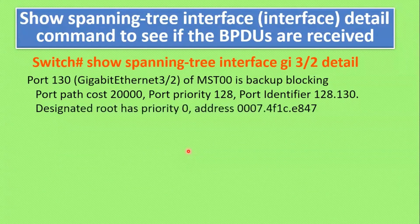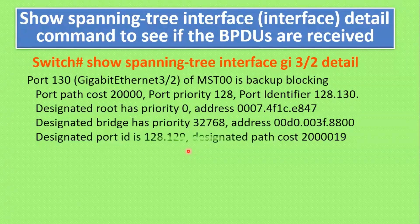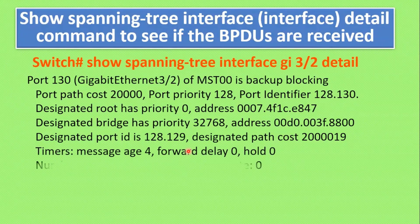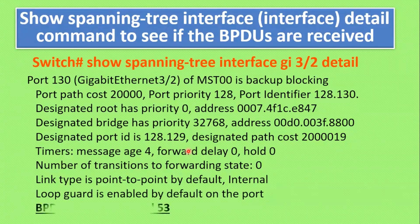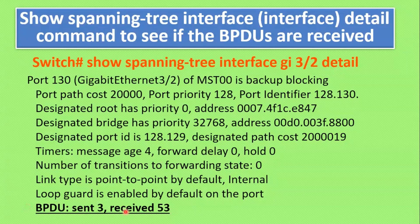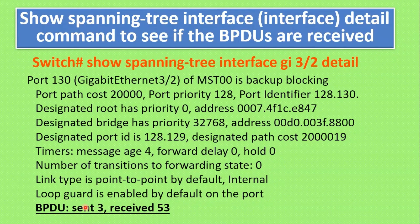For debug-level troubleshooting, if a switch is not participating in STP or RSTP election, use the command: show spanning-tree interface [interface name] detail. The output shows BPDUs sent and received — for example, BPDUs sent: 3, received: 53. This tells you that the interface is exchanging BPDU packets with the other end, and is a very useful troubleshooting command to verify BPDU exchange.